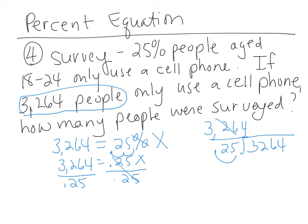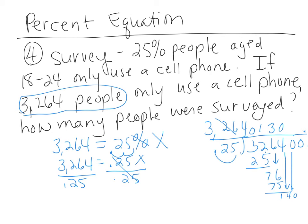We have two decimal places, so we add two zeros to get rid of the decimal. So 25 goes into 32 once — that's 25, remainder 7. Bring down the 6: 25 goes into 76 three times, that's 75. Bring down the 4: 25 doesn't go into 14, so it's a 0. Bring down another 0: 25 goes into 140 five times, that's 125.